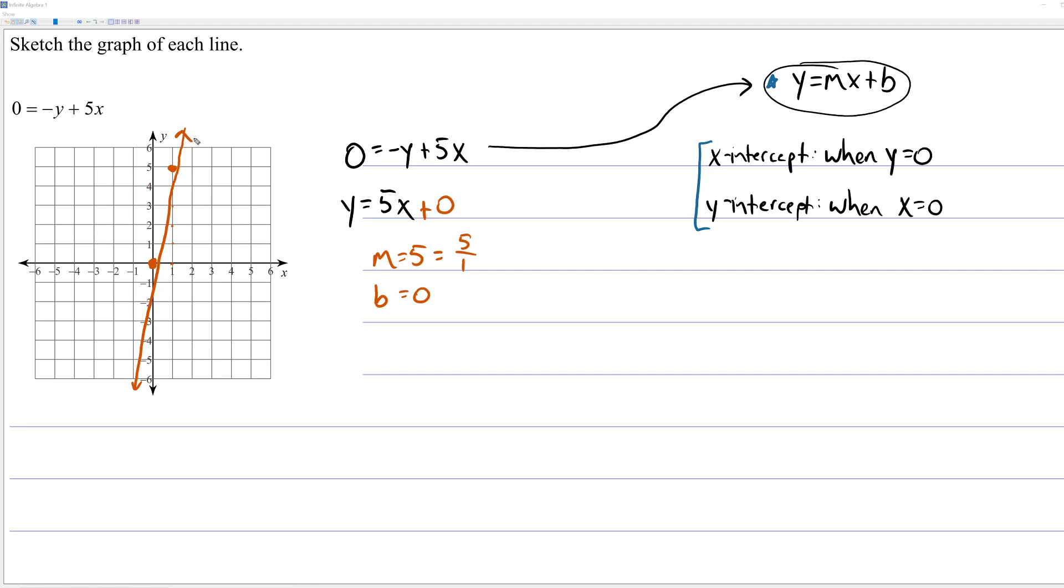So, those are two basic ways to graph lines. Either convert to slope-intercept form like we did in this example or, as in the previous example, find the x and y-intercepts. Hope that helped. See you next time.